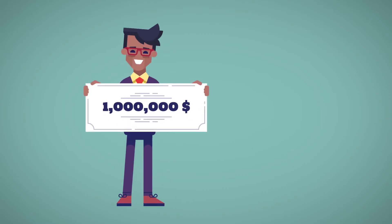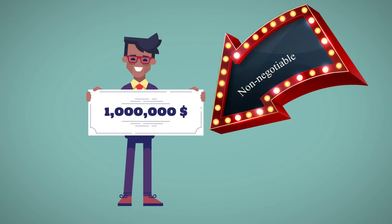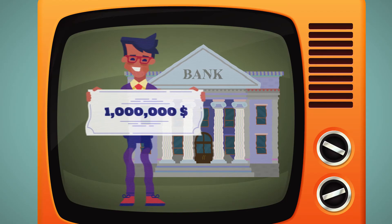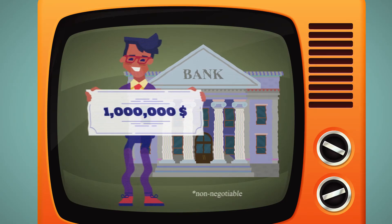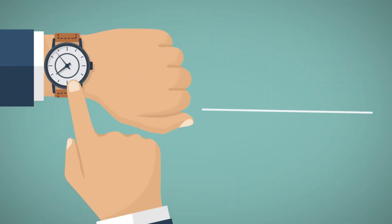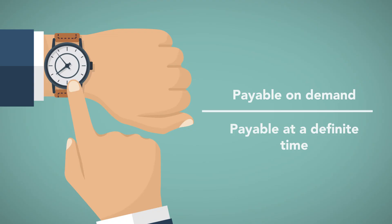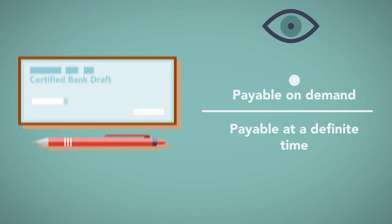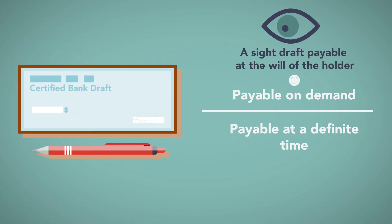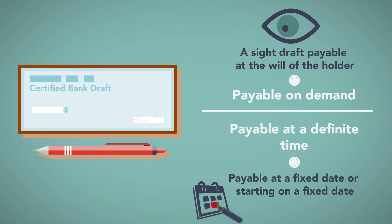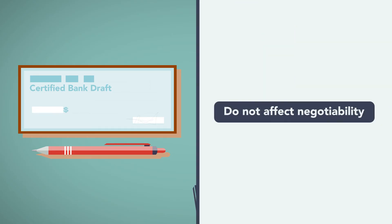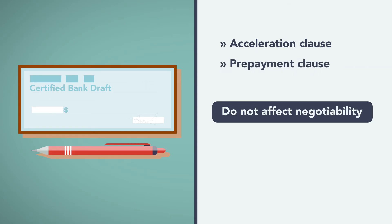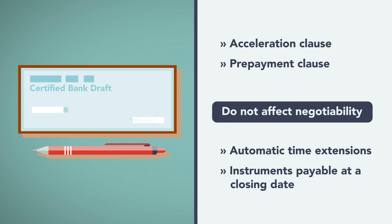The code permits an instrument to indicate that it is non-negotiable. For example, a bank may wish to use a sample or symbolic check in its advertisements that is non-negotiable. Another requirement for negotiability is that an instrument must be payable on demand or at a definite time. A draft payable on demand is a sight draft payable at the will of the holder. A draft payable at a definite time may be payable at a fixed date or starting on a fixed date. Note that acceleration and prepayment clauses do not affect negotiability. Neither do automatic time extensions or instruments payable at a closing date.